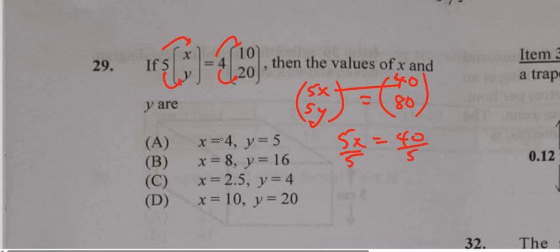So we divide by 5, get x equals 8. In other words, 5 times x or 5 times 8 gives us 40. So x is 8.